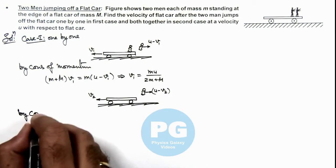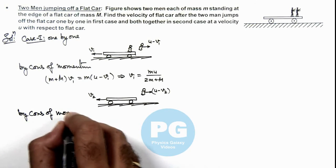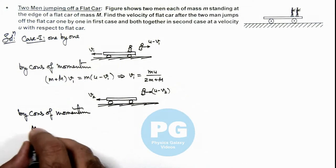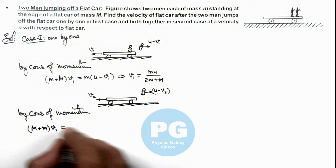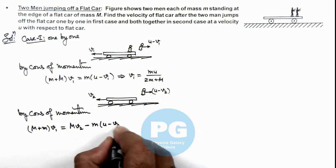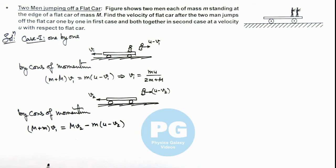So again we can write by conservation of momentum, the initial momentum of the car before the second boy jumps was (M + m)v1 toward left, and final momentum must be equal to this. So this is Mv2 minus, because the boy is moving toward right, it is m into (u - v2). So from here we can substitute the value of v1 which we already obtained. So this can be written as (M + m) multiplied by v1, we can substitute as mu/(2m + M), is equal to Mv2 minus mu.